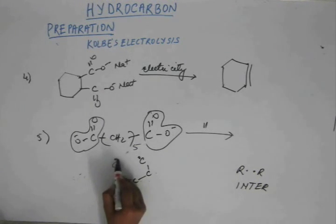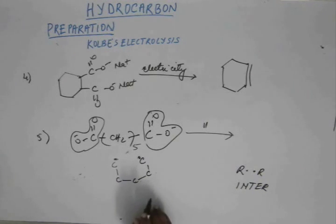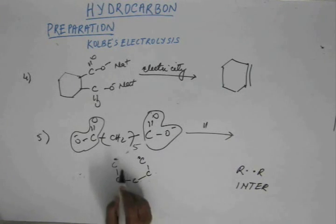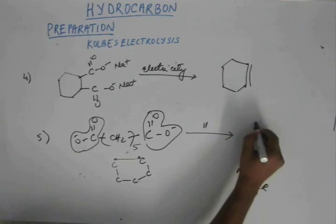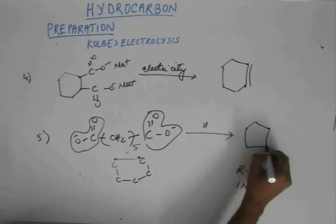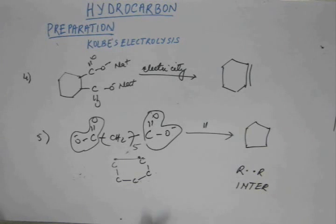So these two carbon atoms will be much closer than they were shown in previous structure. So they will form a bond like this. So the final product would be cyclopentane. Fine?